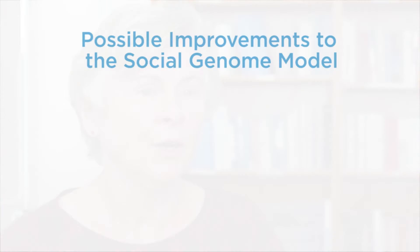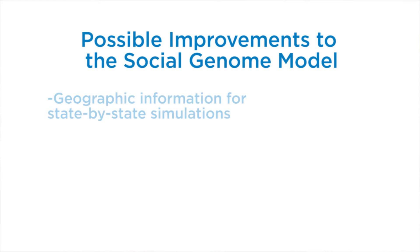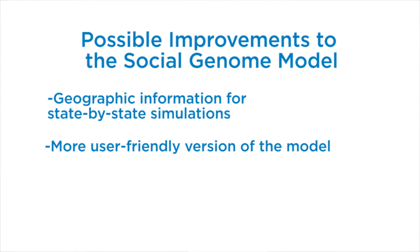The Social Genome Model is already a very powerful tool, but we're always looking for additional new partners and investors so we can improve it even more. We're interested in adding geographic information, which would let us run simulations on a state-by-state basis. Another thing we're looking into is a way to make the model user-friendly to the point where anyone could run a simulation on their own through an app or a web page. I think that would really expand the relevancy of the model and help it reach a lot more people.